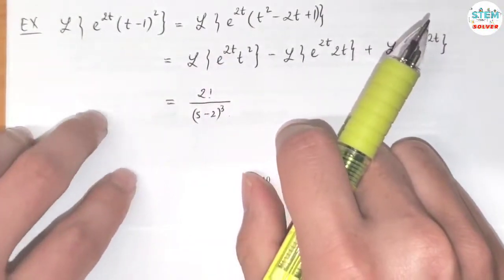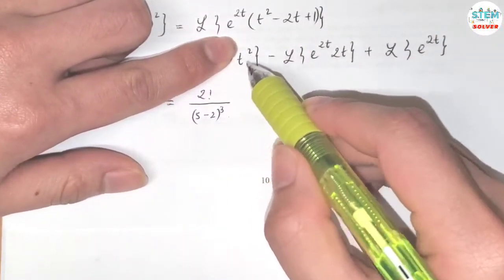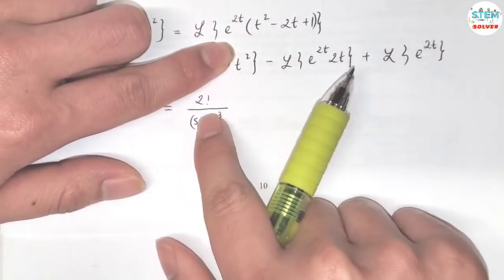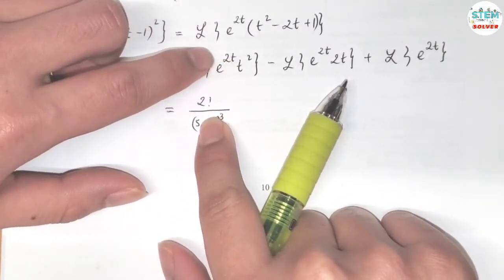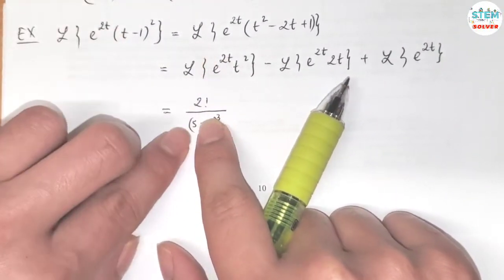So for this one, you kind of ignore this first and take the Laplace transform of t squared, which is 2 factorial over s cubed. And then you have e to the 2t, so the shift is 2, so you have s minus 2.